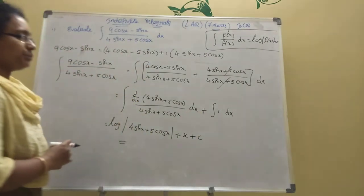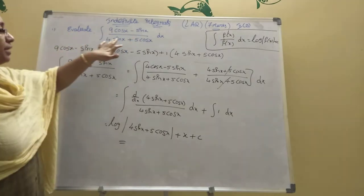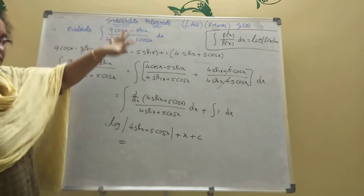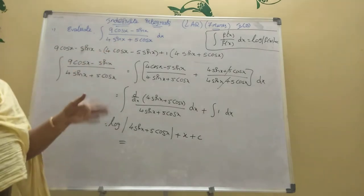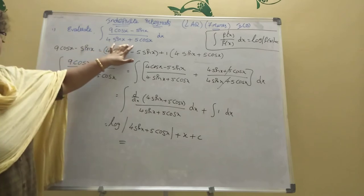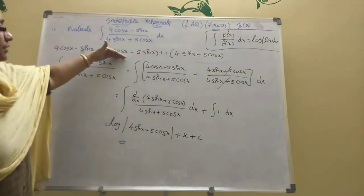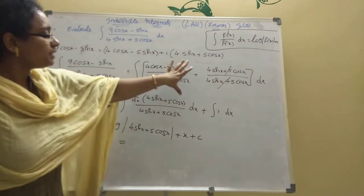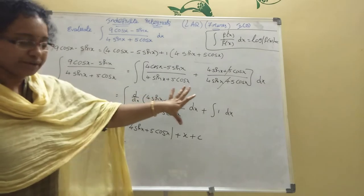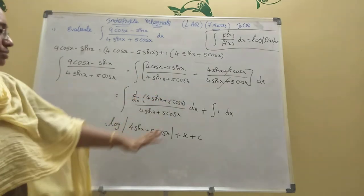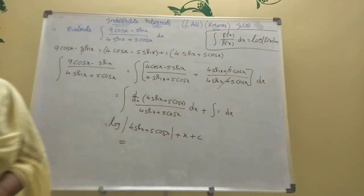Here is the general formula: if you have (a cos x plus b sin x) divided by (b sin x plus d cos x), then set numerator equal to A into d/dx of denominator, plus B into denominator. Find A and B values, apply them, split the integrals, and find each integration. This is how you get 7 marks easily.